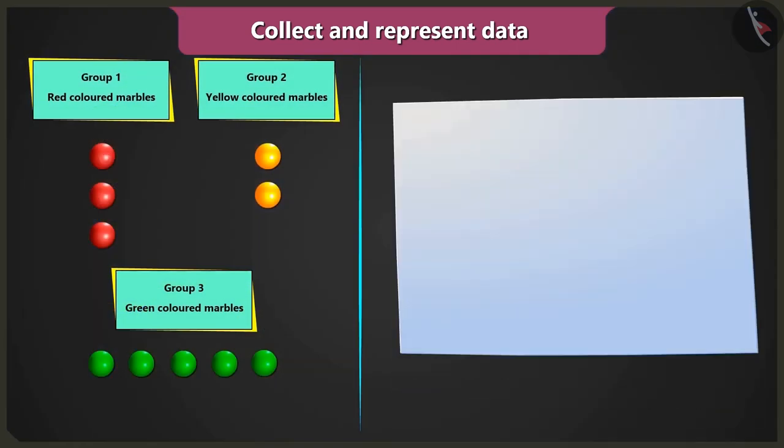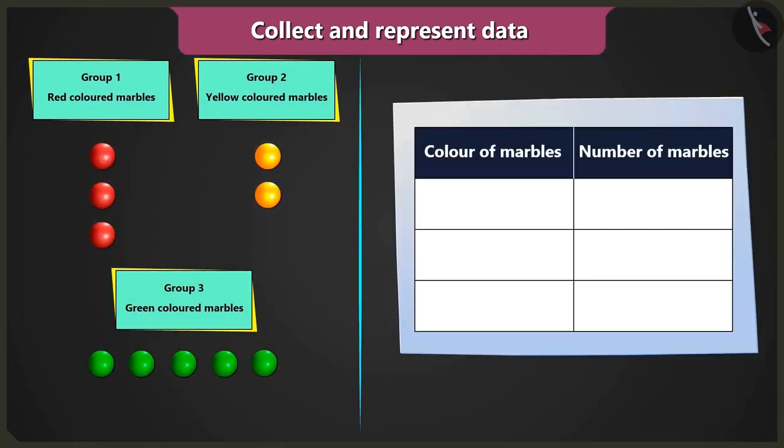Well done. Now create a table like this. Then? Now you have to write the names of the colors red, yellow, and green in the column color of marbles.